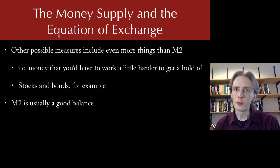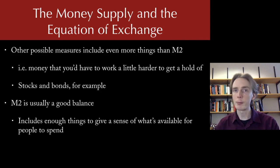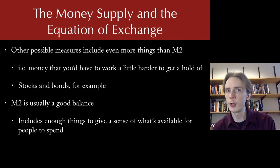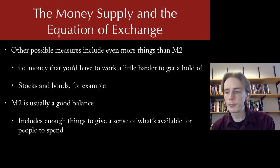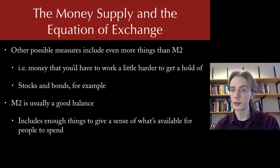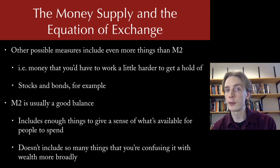Because we're interested in how people plan for spending decisions, M2 is a pretty good balance — broad enough that it captures what people feel they have available when making spending decisions, but not so broad that we're confusing the money supply with wealth in general. That wouldn't be useful for talking about business cycles. For our purposes, M2 will do well enough.